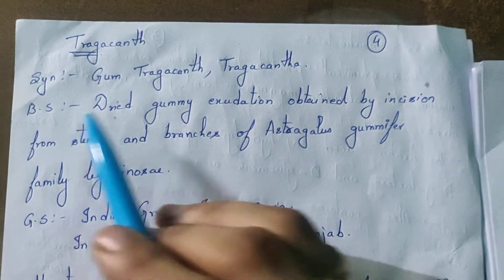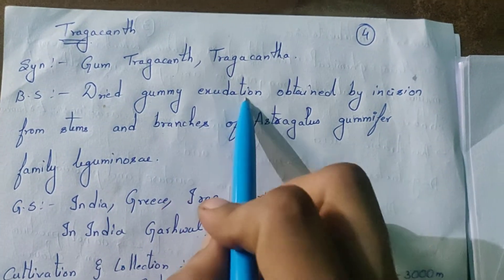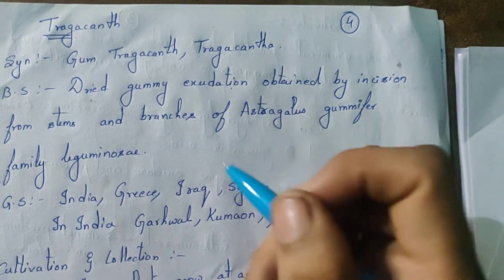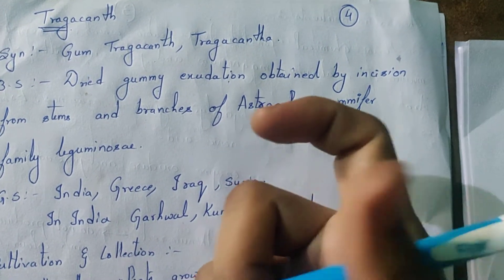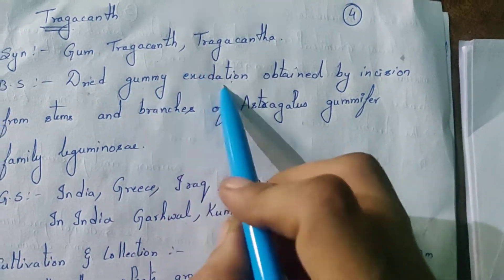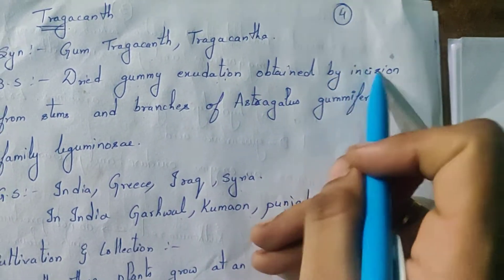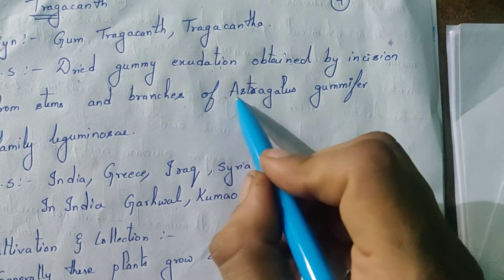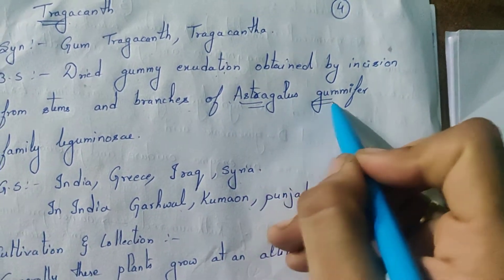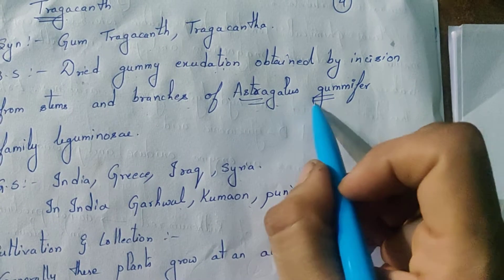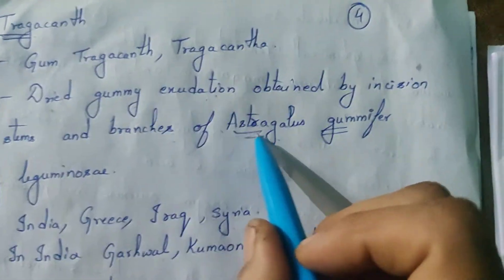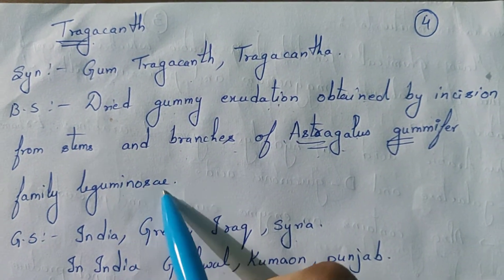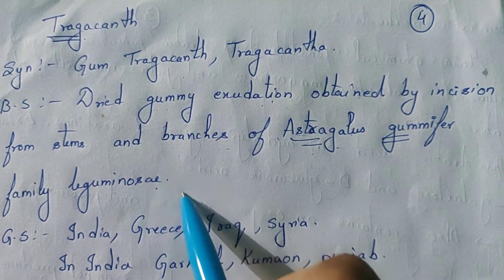Coming to biological source. These are obtained from dried gummy exudations — exudations means excretion types — which ooze out of the plant. These are dried gummy exudations obtained by incisions from stems and branches of the plant Astragalus gummifer, belonging to the family Leguminosae.